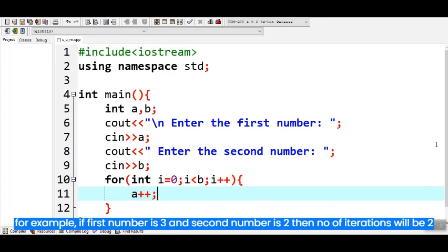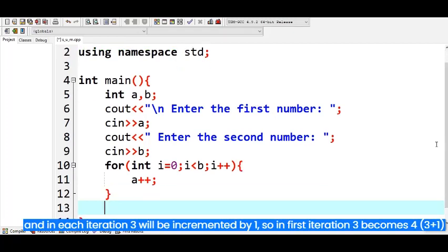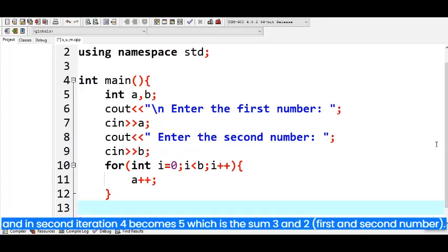For example, if first number is 3 and second number is 2 then number of iterations will be 2. And in each iteration 3 will be incremented by 1. So in first iteration 3 becomes 4. And in second iteration 4 becomes 5 which is the sum of 3 and 2.